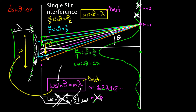I got to be honest with you: single-slit interference is confusing. In fact, this argument I gave earlier — first time I heard about this, I thought this was just mathematical mumbo-jumbo. I was like, what are you talking about? This makes no sense. It seems like you could argue anything like this, but you can't. I'm going to try to show you that in this video.